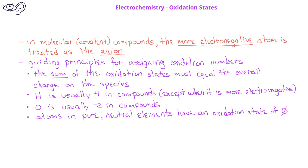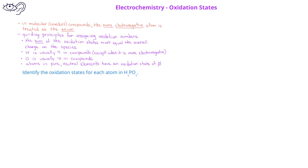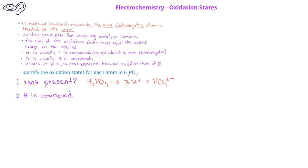Let's look at an example where we can identify the oxidation states for each atom in phosphoric acid, H₃PO₄. We can begin by identifying the different ions present in phosphoric acid: three hydrogen ions, and the phosphate ion PO₄ with an overall three minus charge. Since we have hydrogen, we will use our guiding principle that hydrogen is generally plus one when it's in a compound. Next, we have the phosphate ion PO₄ three minus.